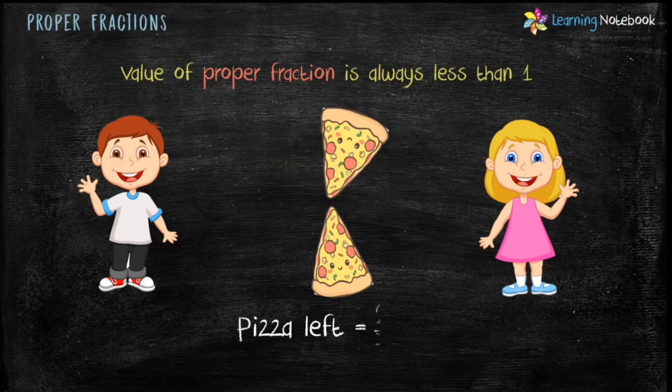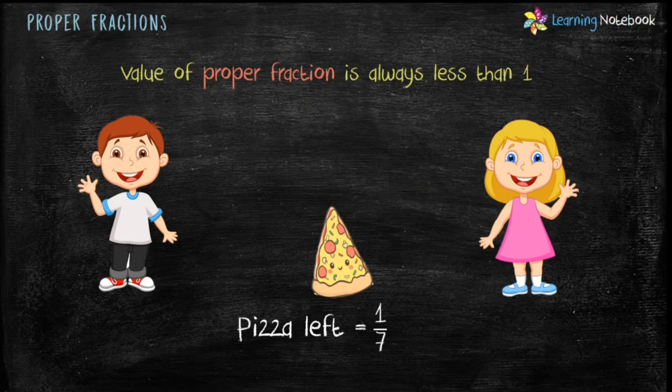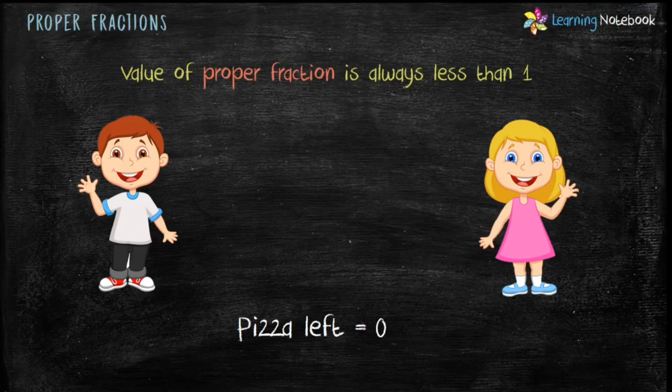Finally, they both finish eating the whole pizza and pizza left is 0. So therefore students, the value of a proper fraction is always less than 1.